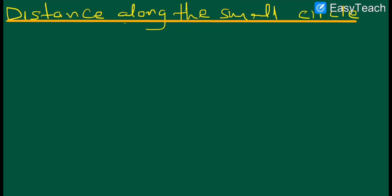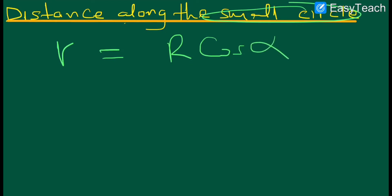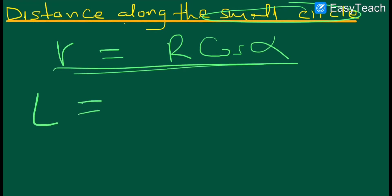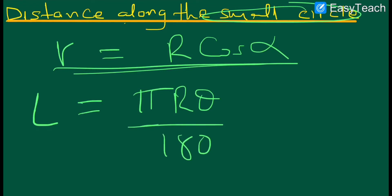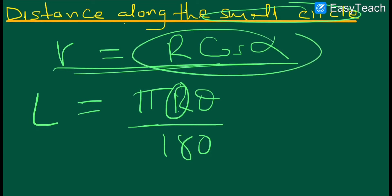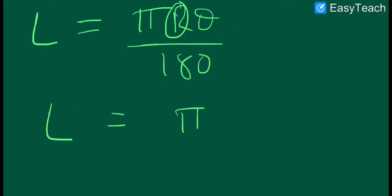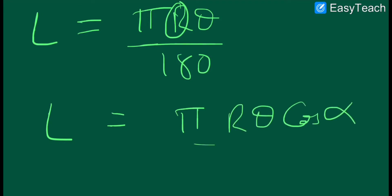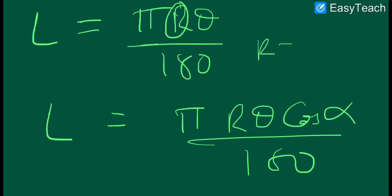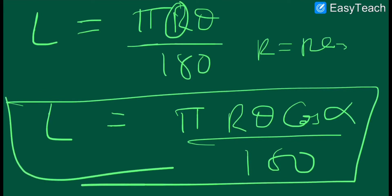Now let us find the distance along the small circle. For the small circle, you must note that the radius equals R times cos(alpha), where alpha is the angle of latitude. We know the great circle length is πRθ/180. For the small circle, we replace R with the small circle radius R·cos(alpha). So the length along the small circle becomes πRθ·cos(alpha)/180. This is the formula for finding the distance along the small circle in terms of nautical miles.